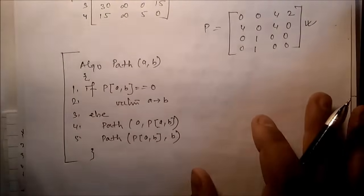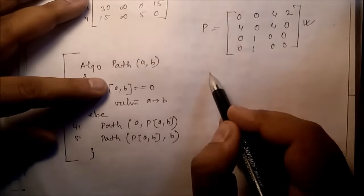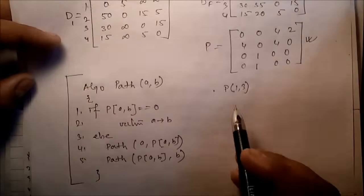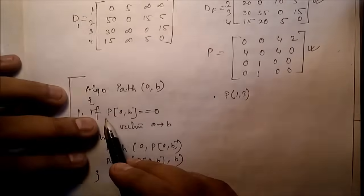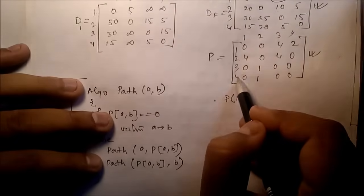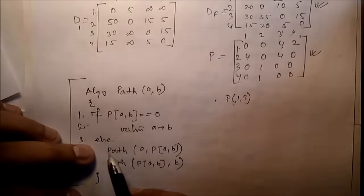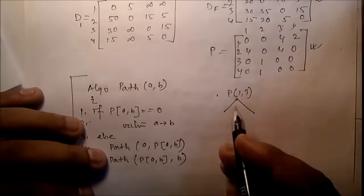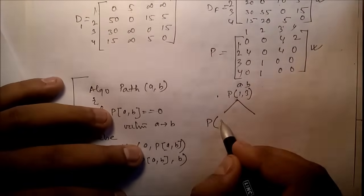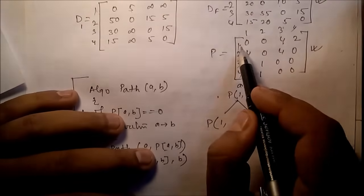Suppose we want to know the path between node 1 and node 3. We call the path function for 1 to 3. We check P[1][3] — is it zero? No, it is not zero, so we execute the else part which is recursive. Here a=1 and b=3, and P[1][3] is 4.